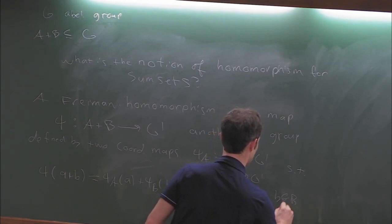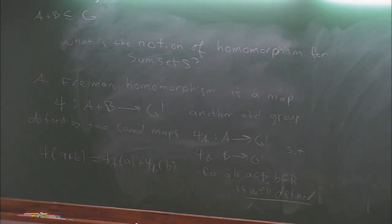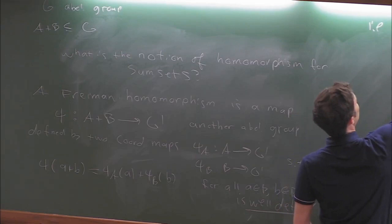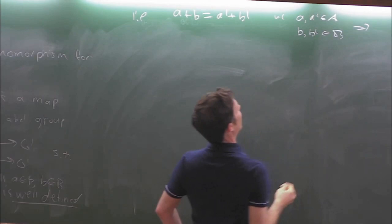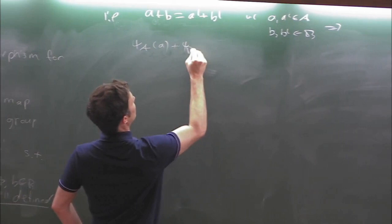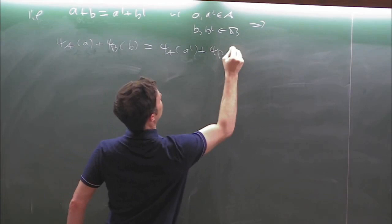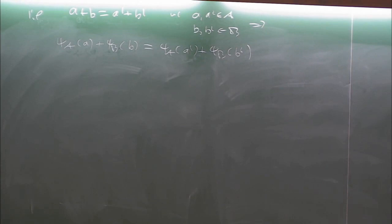What does it mean for it to be well defined? If a plus b equals a prime plus b prime, then we have to have psi_A(a) plus psi_B(b) equal psi_A(a prime) plus psi_B(b prime). Otherwise this wouldn't be well defined, because this is only defined as a single element of A plus B. But as long as we have that condition, we can define this map, and we're going to call this a Freiman homomorphism.